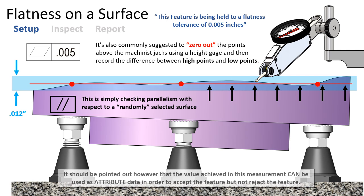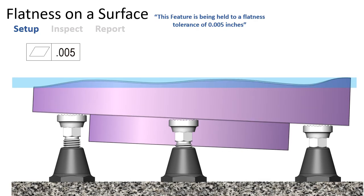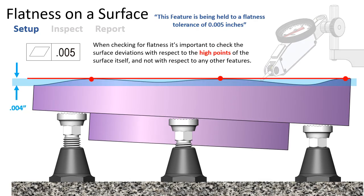The difference between the high and low values is simply the parallelism error to a randomly selected plane. Once again, this value can still be used to accept the part in an attribute way, but we cannot use that value if it's larger than the flatness tolerance to necessarily reject this feature. If we get a value less than five thousandths we can accept it for flatness; if we get more than five thousandths we cannot reject that for flatness.